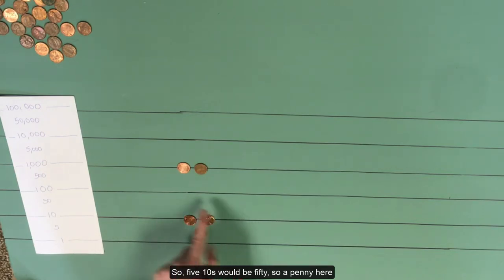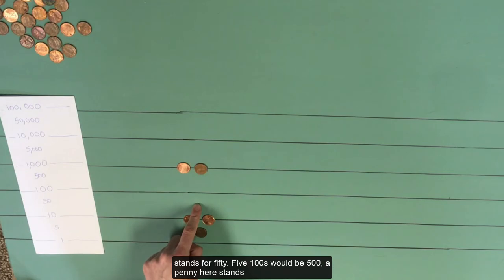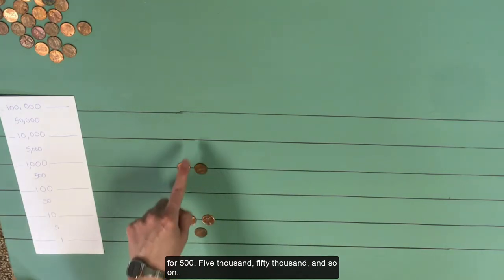So 5 10s would be 50, so a penny here stands for 50. 5 100s would be 500, a penny here stands for 500. 5,000, 50,000, and so on.